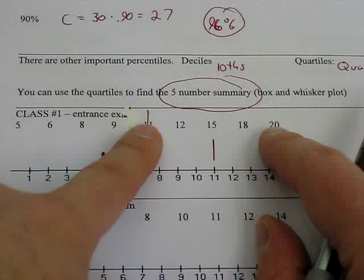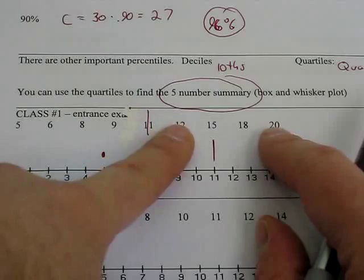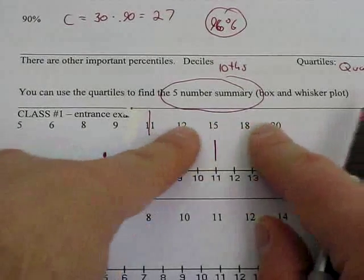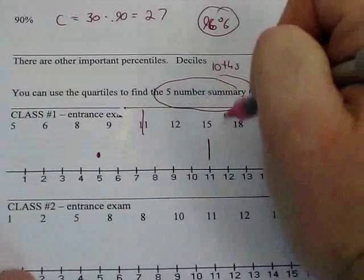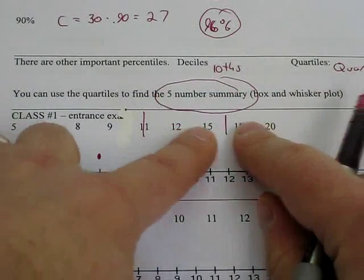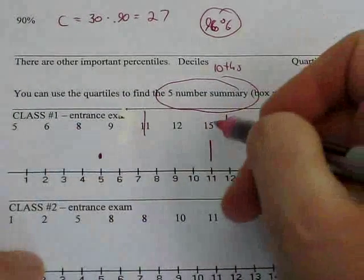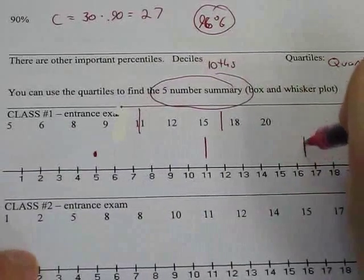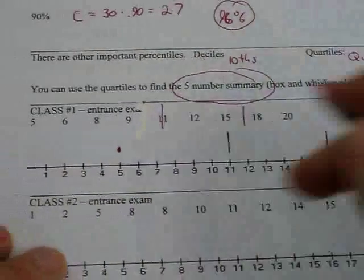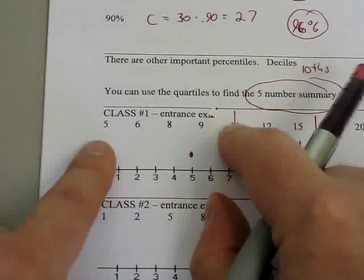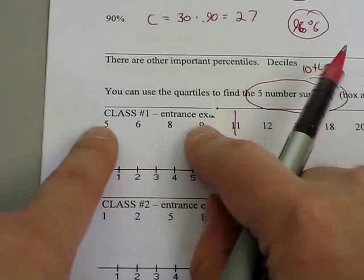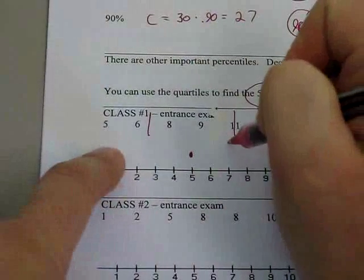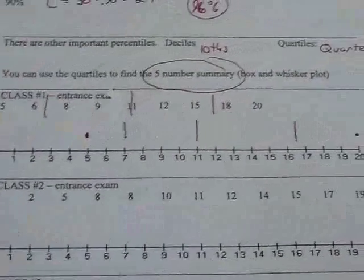Since this is our median, we move our finger off of the median, and then we try to find the middle of the top data for our Q3. We split our top data, those four pieces in half, and this gives me the number between 15 and 18, which is 16.5. And there's our Q3. Then we do the same thing. We put our finger on the 5 and the 9 and go to the middle. The number between 6 and 8 is 7. And there we have our box and whisker plot.